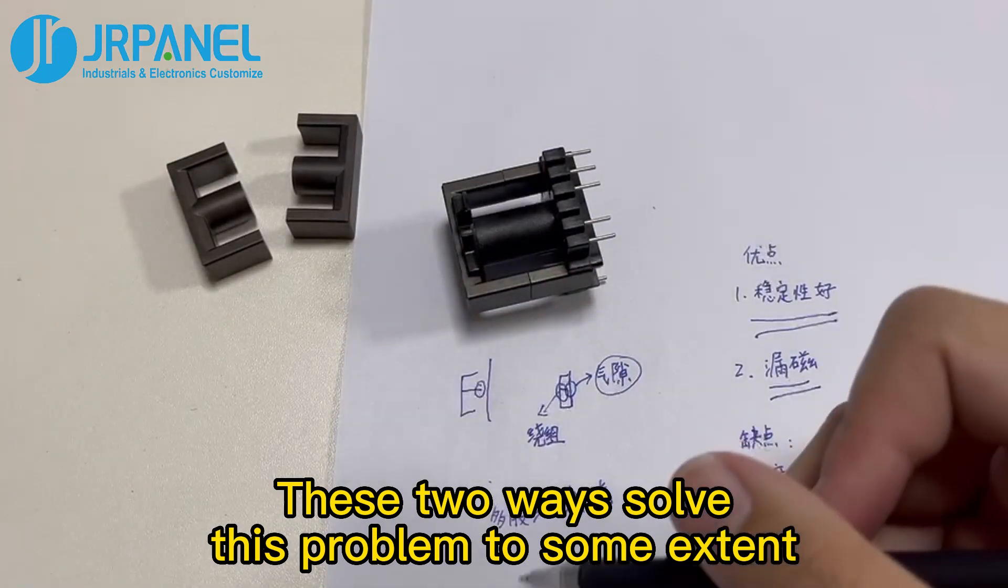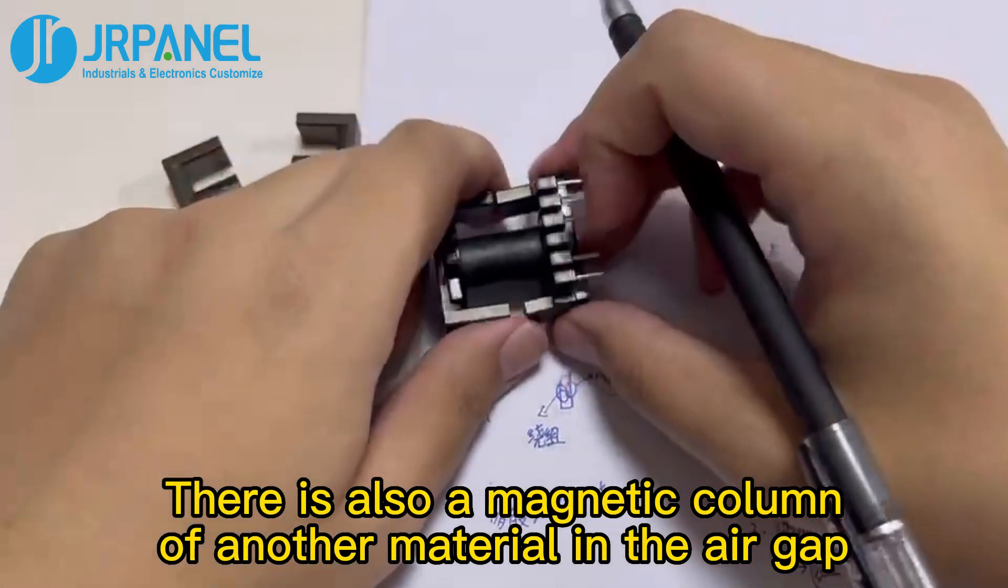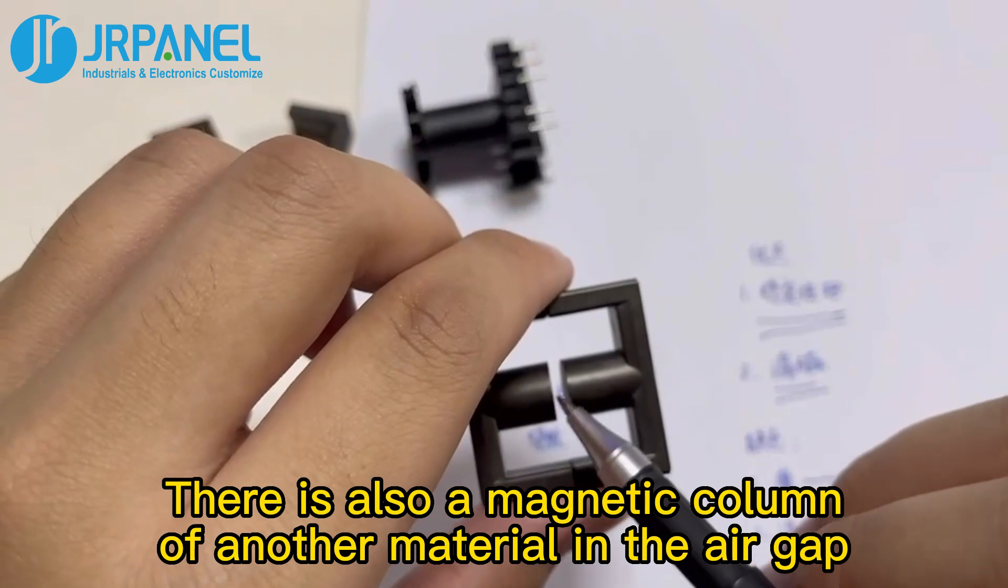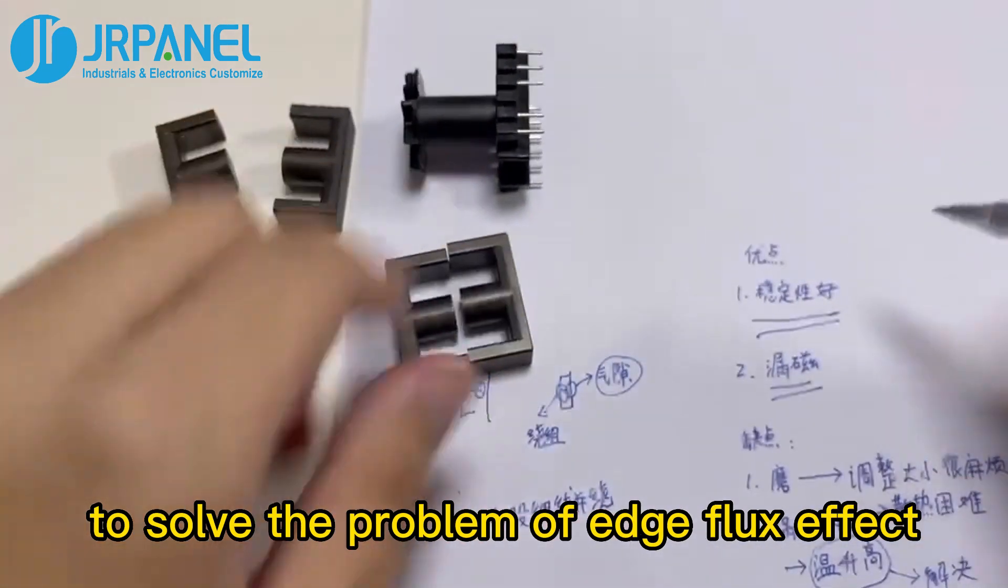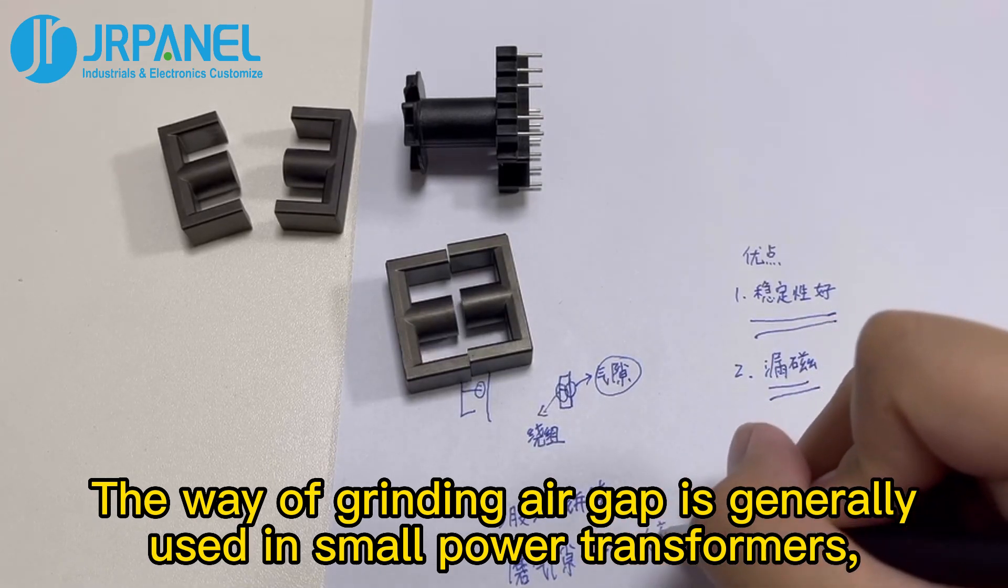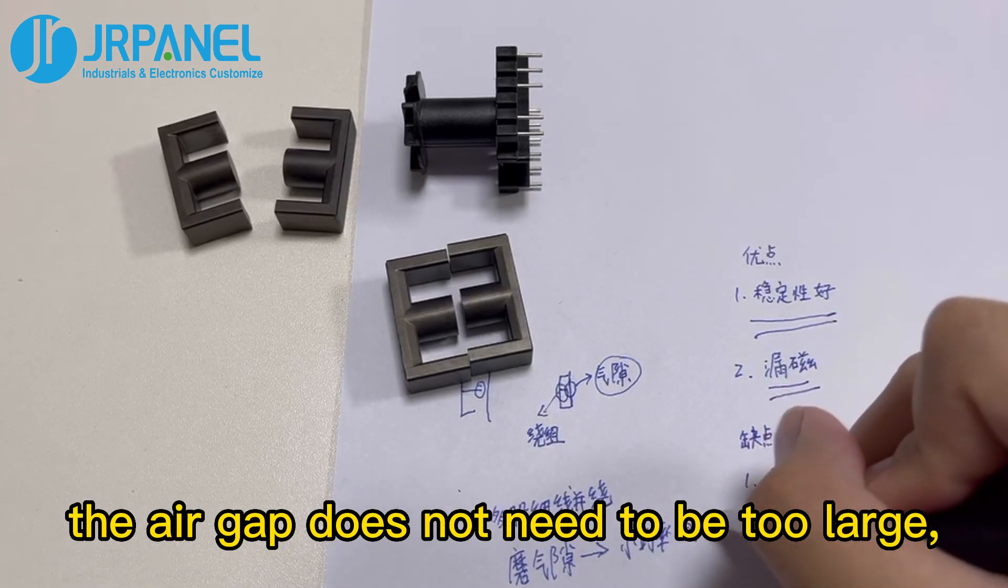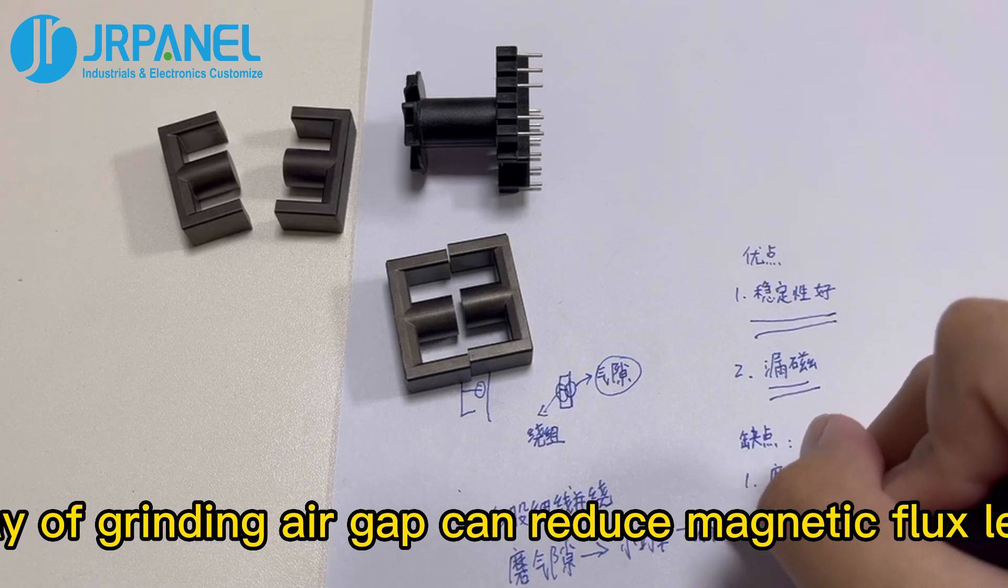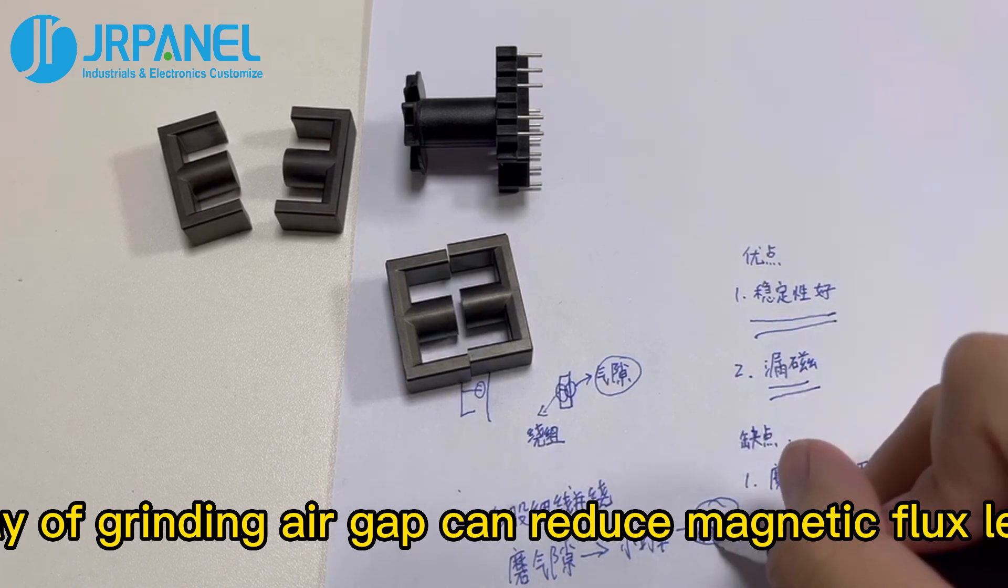These two ways solve this problem to some extent. There is also a magnetic column of another material in the air gap to solve the problem of edge flux effect. The way of grinding air gap is generally used in small power transformers. The air gap does not need to be too large. The way of grinding air gap can reduce magnetic flux leakage.